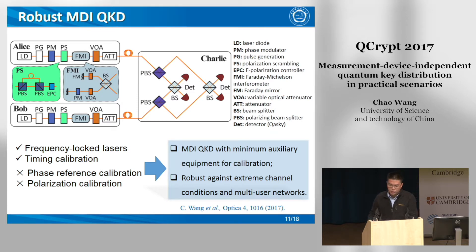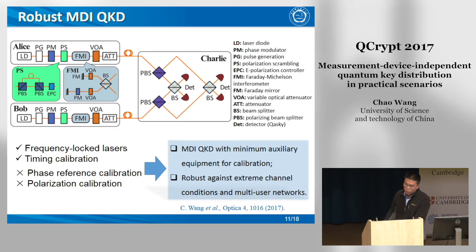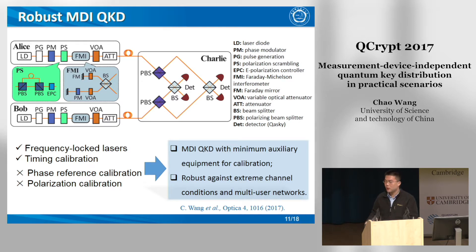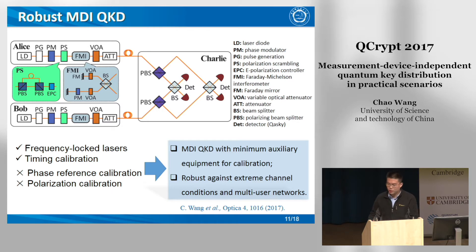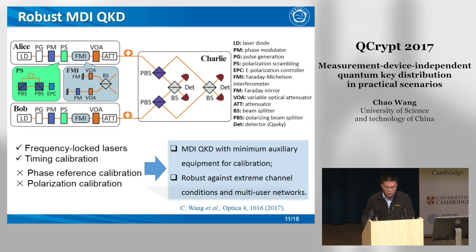For this problem, we further improved the system and developed polarization scrambling units to counteract the polarization instability of field links. Together with a separative detection structure, we proposed and verified an MDI-QKD scheme that is stable against environmental disturbances, and the final secret key rate is insensitive to both polarization fluctuations and phase reference drift. Moreover, the calibrations of the primary reference frames are removed in our scheme, which prevents extra information leakage, reduces resource consumption, and improves the final efficiency of the entire system in extreme channel conditions.